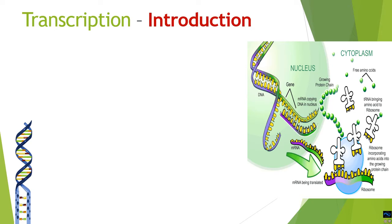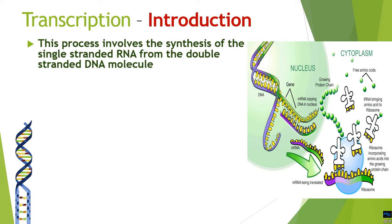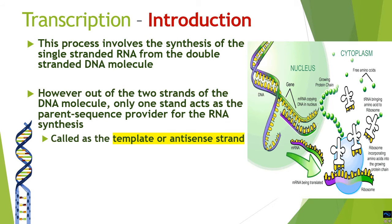From the central dogma, transcription is the middle process — second to replication — and it involves the synthesis of an RNA molecule, which is usually single-stranded. The synthesis takes place from information derived from the parental double-stranded DNA molecule. DNA itself is a double helix containing two strands.